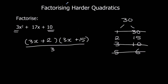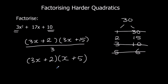Now that's factorised, but I just want to get rid of this over 3. I'm looking for which bracket I can divide to get rid of the 3. The first bracket — those numbers aren't both in the 3 times table, so I'm going to leave it as 3x plus 2. The second bracket — those are in the 3 times table. So 3x divided by 3 is just x, and 15 divided by 3 is just 5. So that's factorised. You can check by expanding it back out — the opposite of factorising is expanding.